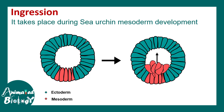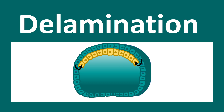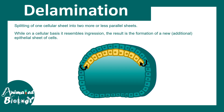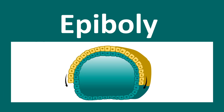A similar ingression-type movement can be found during sea urchin mesoderm development, where the red mesodermal cells are ingressing inside the embryo. The next kind of movement is delamination. Delamination is very similar to ingression, but it results in the splitting of one cellular sheet into a parallel sheet. One key difference is that delamination occurs in a collective fashion — it's not just one cell moving inside, but a whole layer of cells that splits or moves inside. Delamination is a very important type of morphogenetic movement.